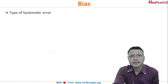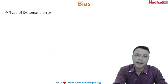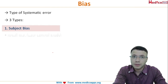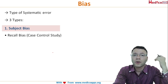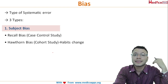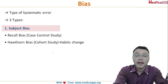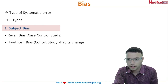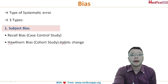Bias is a problem in results caused by systematic error. There are three types. The first is subject bias: the participant may not be able to recall information — recall bias seen in case-control studies. Another form is when the subject changes habits during the study, such as a non-smoker who starts smoking in the comparison group — habit change, which occurs in cohort studies.